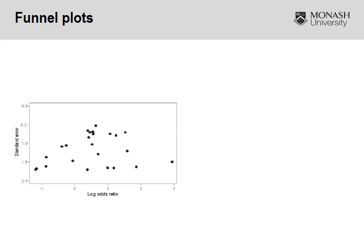Here we've got what we call a funnel plot. It doesn't look like much of a funnel, but the name is taken from inverting a funnel to get this shape. Basically, what a funnel plot tries to identify is whether or not publication bias has occurred. Along the x-axis, view this as an odds ratio — anything on one side is beneficial or a positive study, anything on the other is a negative study. Along the y-axis we've got standard error: the larger the trial, the smaller the standard error. When you plot all the studies included in your systematic review, you should get this funnel shape.